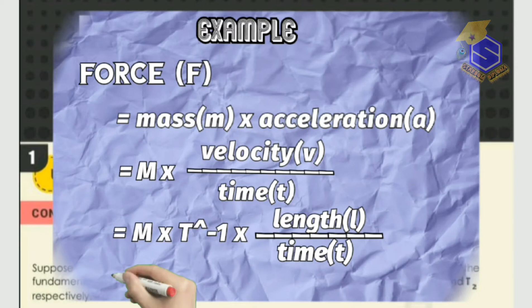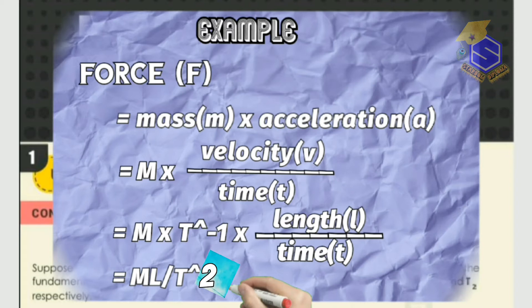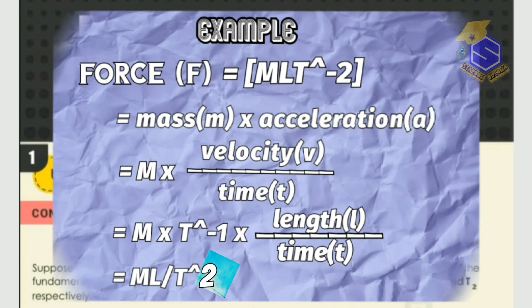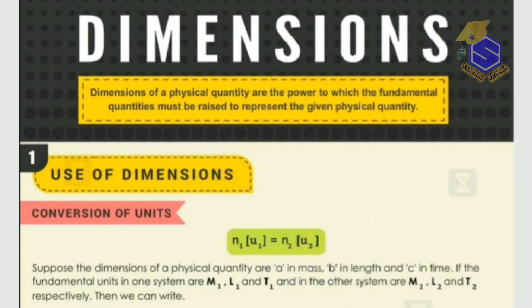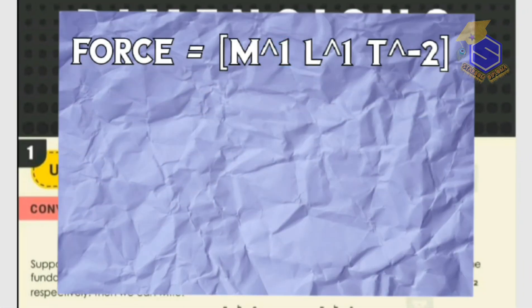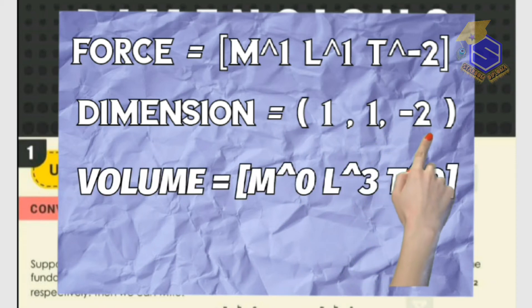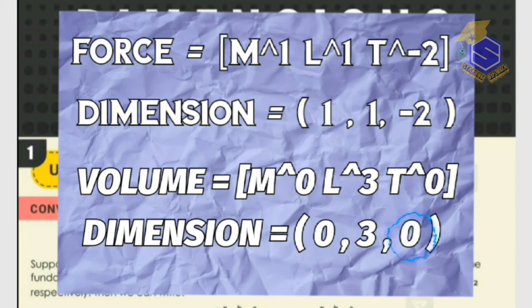Force is written as a combination of fundamental quantities — that is, force equals mass into length divided by time squared. We can write: force equals mass into length into time to the power minus 2. This is the dimension of the physical quantity force. The power of mass is 1, length is 1, and time is minus 2. So the dimension of force is represented as (1, 1, −2) and volume as (0, 3, 0), where the first 0 means no mass and the last 0 means no time.